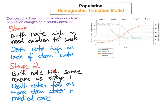In stage 2, birth rate remains high because of the same reasons as in stage 1 — they need children to work and to look after their parents when they get old. Death rate falls dramatically, though. Why? Because there's more access to clean water, medical care has improved, and there's better sanitation.